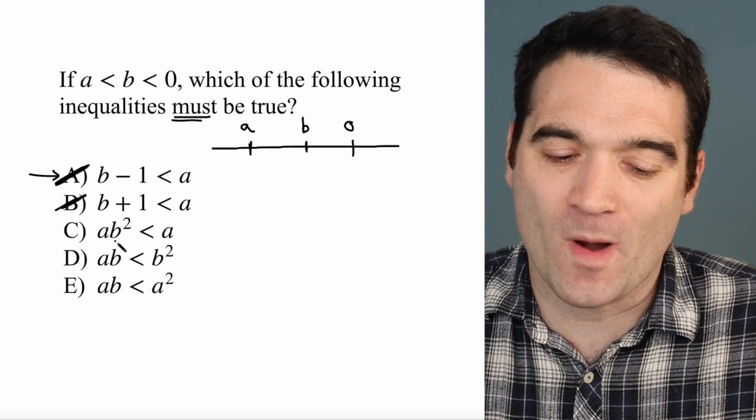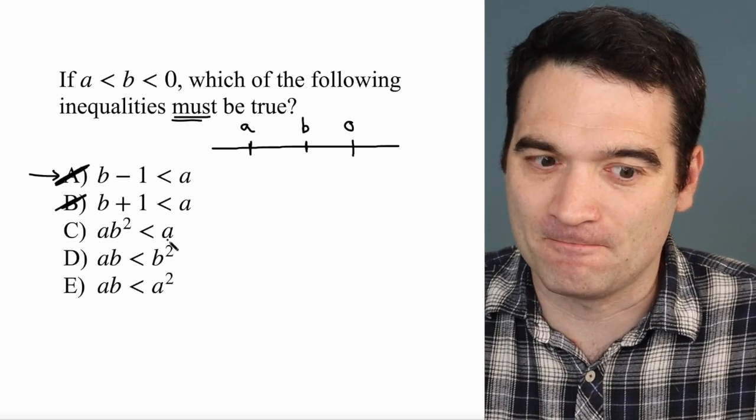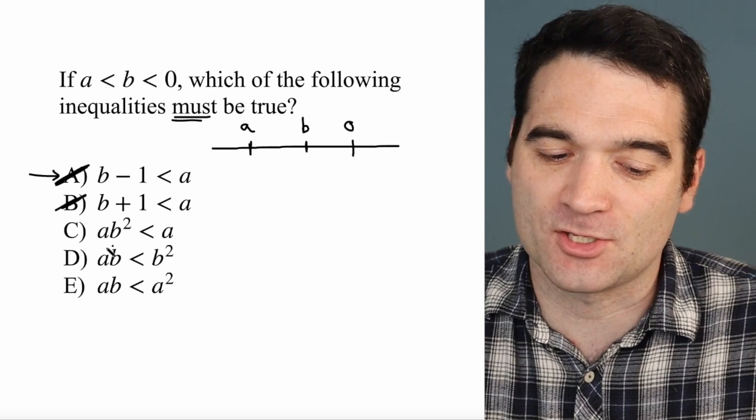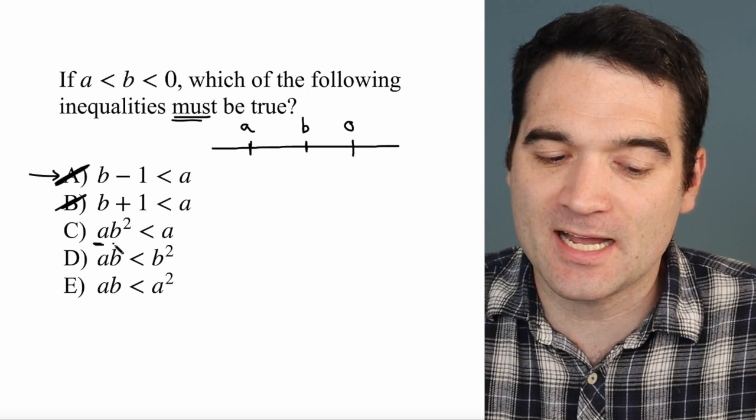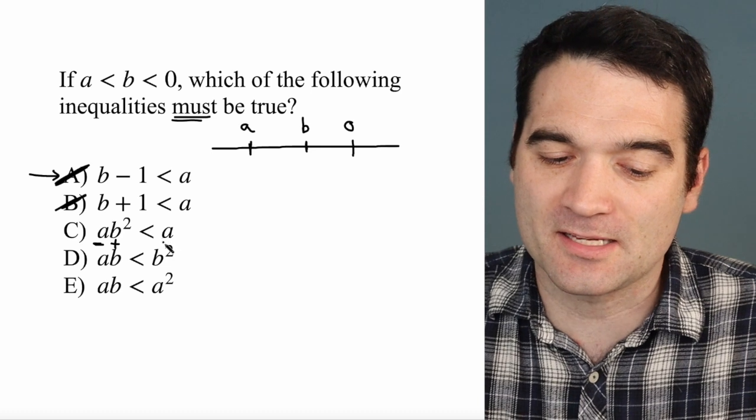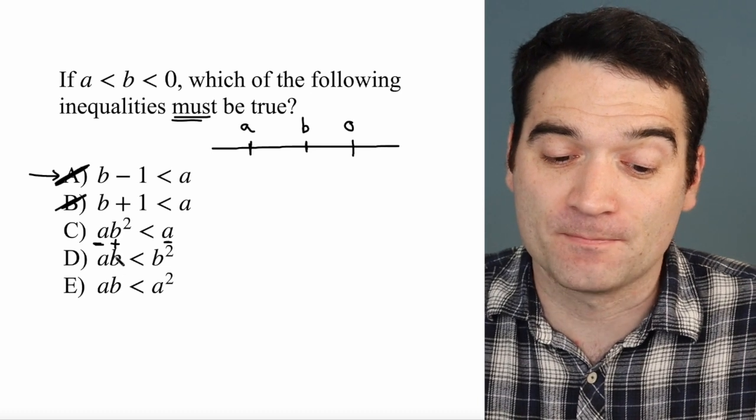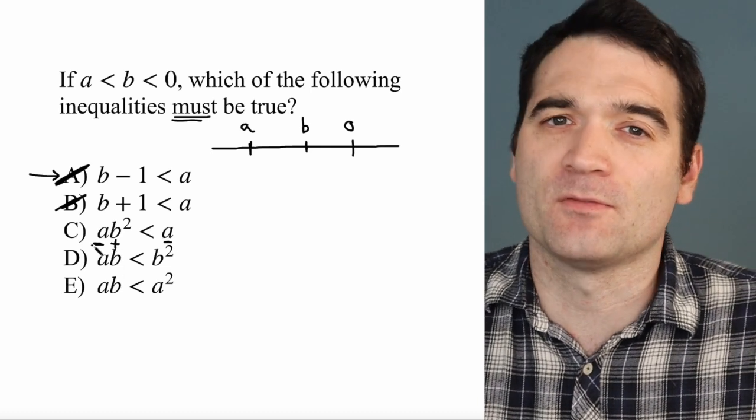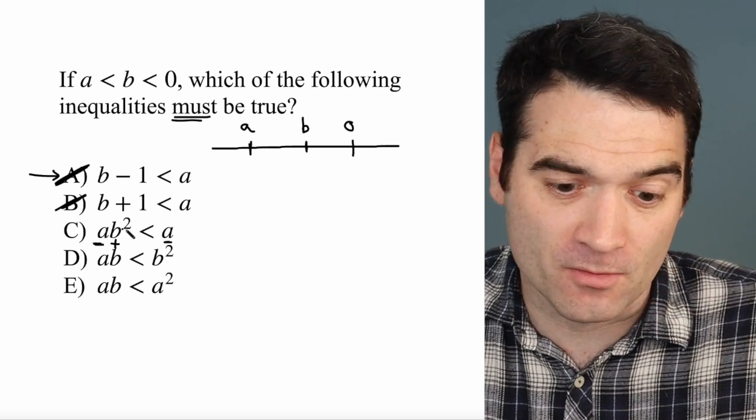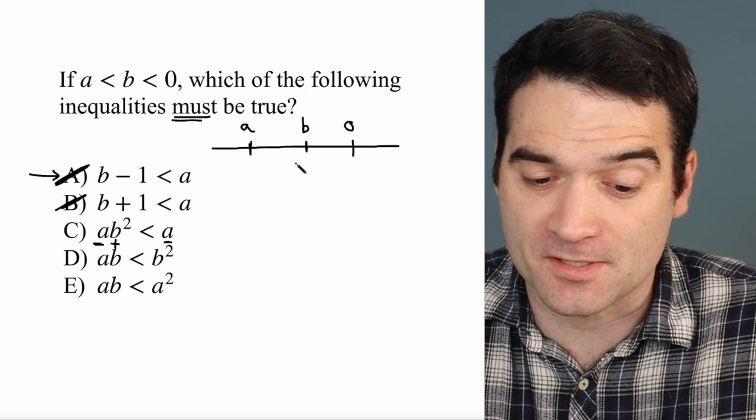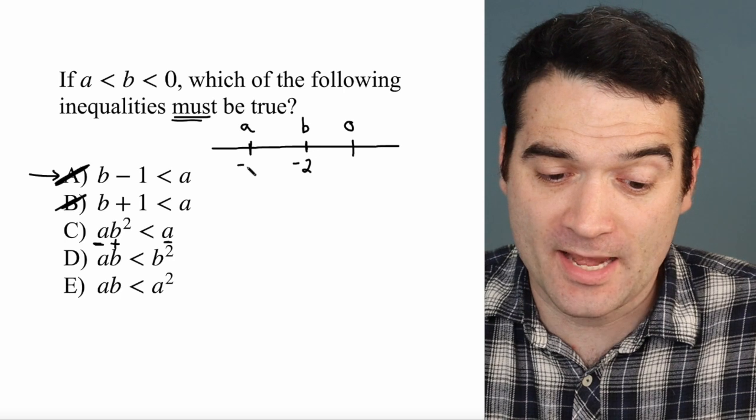A times B squared is less than A. So that's a negative times a positive is less than that original negative. Well, once again, this is an example of one that could be true. Pick some numbers, for instance. Let's say negative 2 and negative 3.